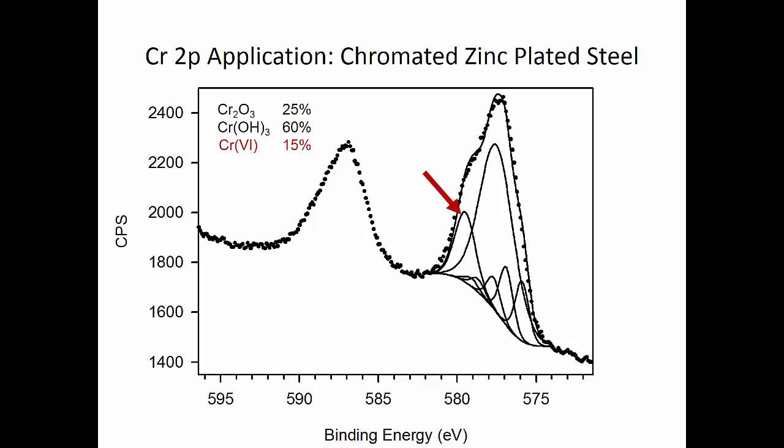And that's what we have for chromium fitting. The other transition metals are similar — we take peaks from standard spectra and fit them into the unknown spectra. Metals like iron, manganese, nickel, and cobalt all have these sorts of structures with multiple split peaks for the various species within each transition metal. All of that is available on the website.